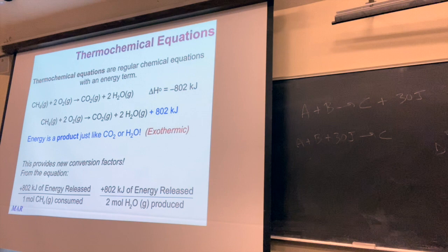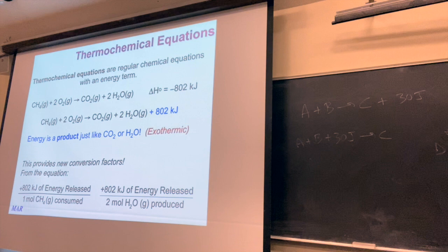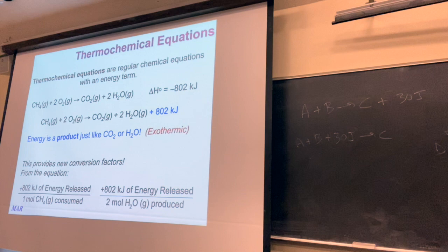On the chalkboard are two examples of a generic A plus B going to C. In the first example, an energy term of 30 joules is a product — that's one way to see this is an exothermic reaction. If energy is a product, it's exothermic and you write delta H as negative. In the second example, the energy is written as a reactant, making it an endothermic reaction with a positive delta H.